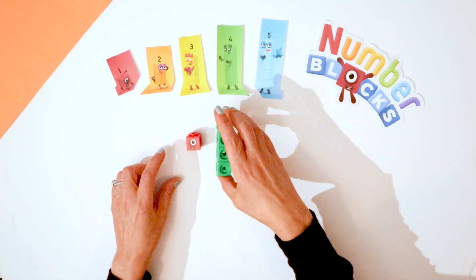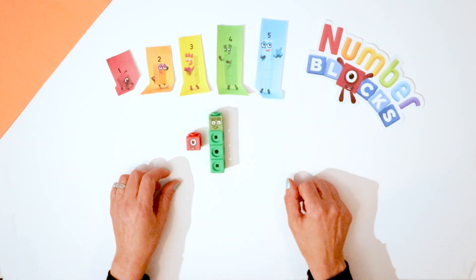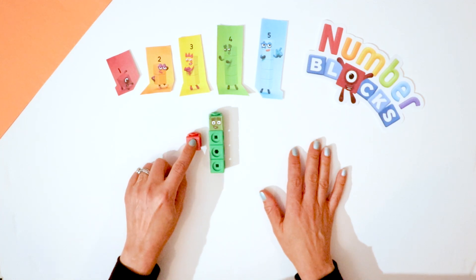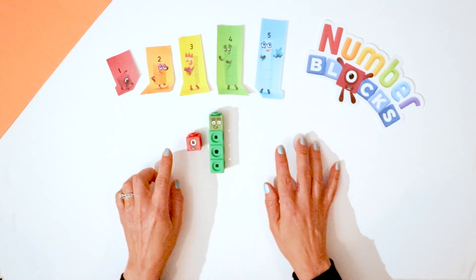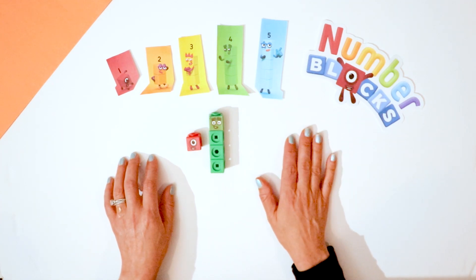One plus four equals five. One, two, three, four, five. One plus four equals five.